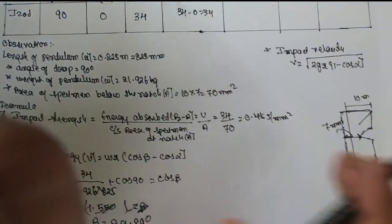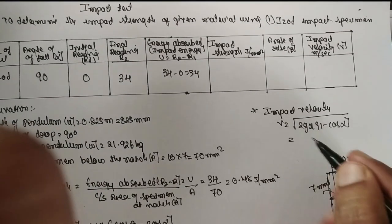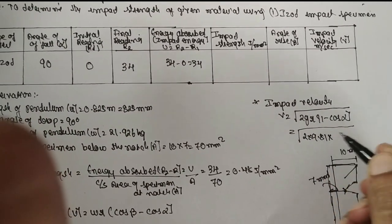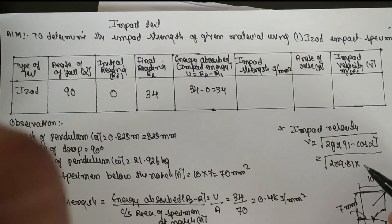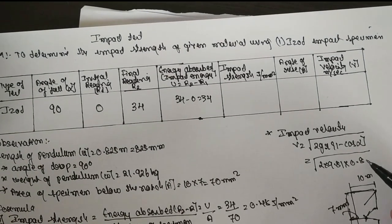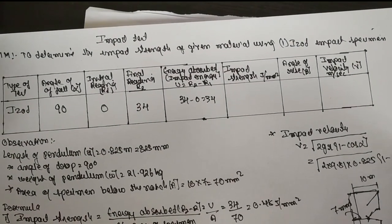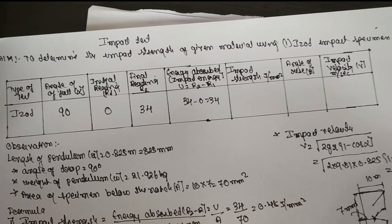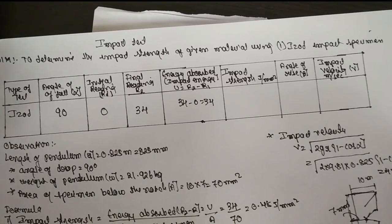Now, find out the velocity, impact velocity. How to find out the impact velocity? Divide by root 2 into 9.81 into R value. In terms of meter, you have to take. Meter, that is 0.825, 1 minus cos 90. If you calculate, the answer will be 4.02 meter per second.